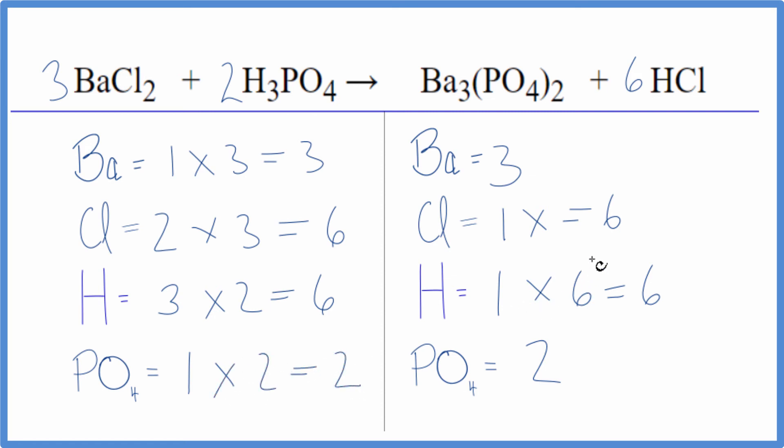We're done. This equation's balanced. You can see the utility - we count this phosphate as just one thing because it's on both sides. It makes it a lot easier to balance.